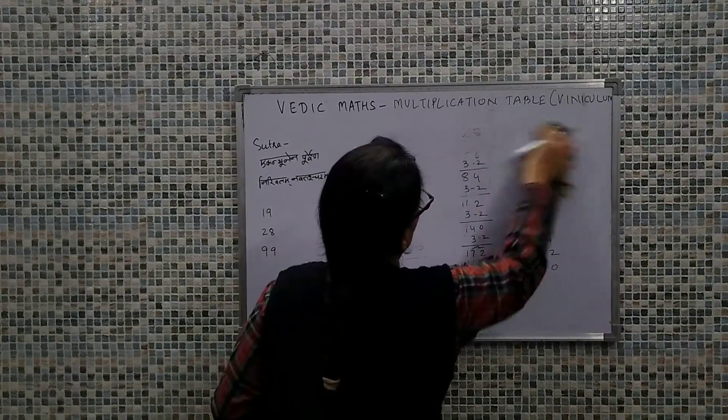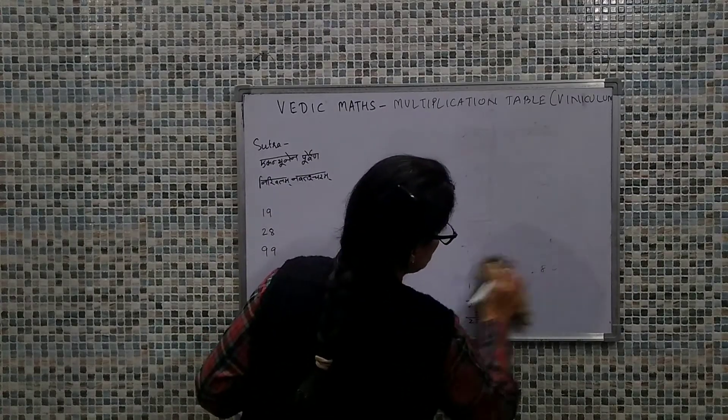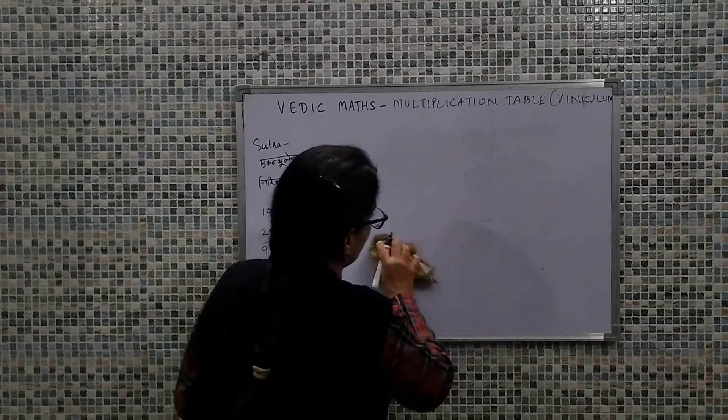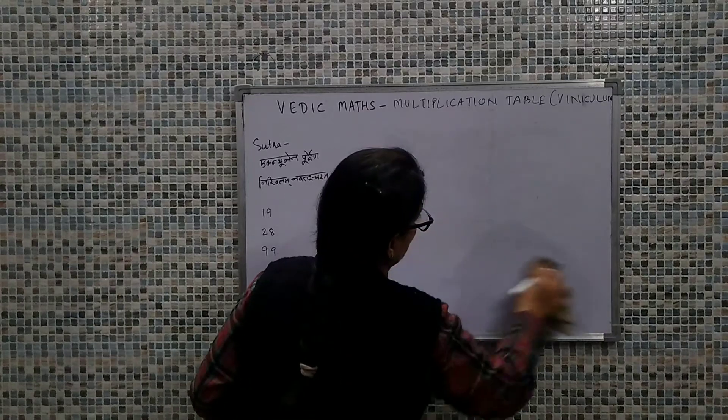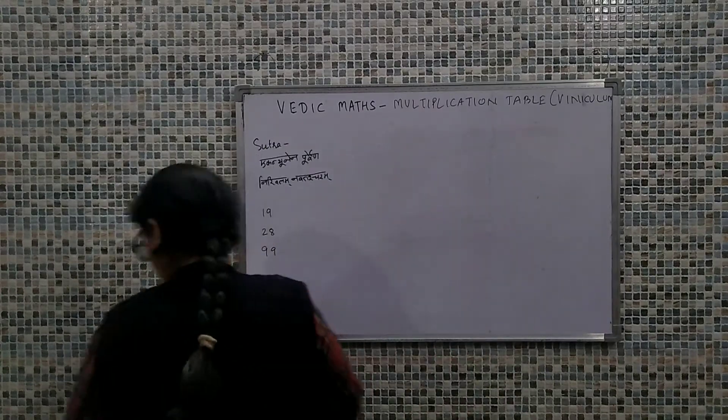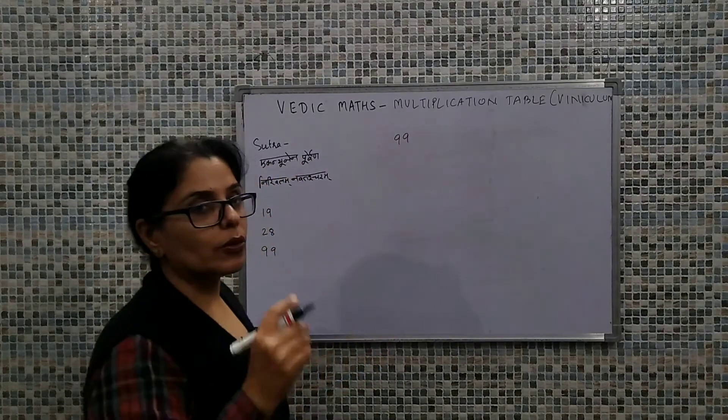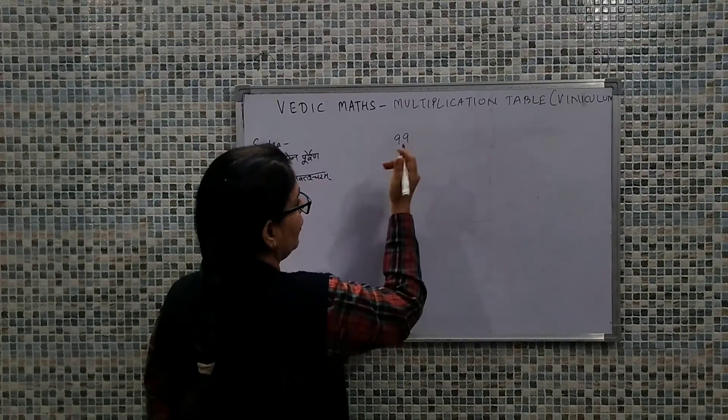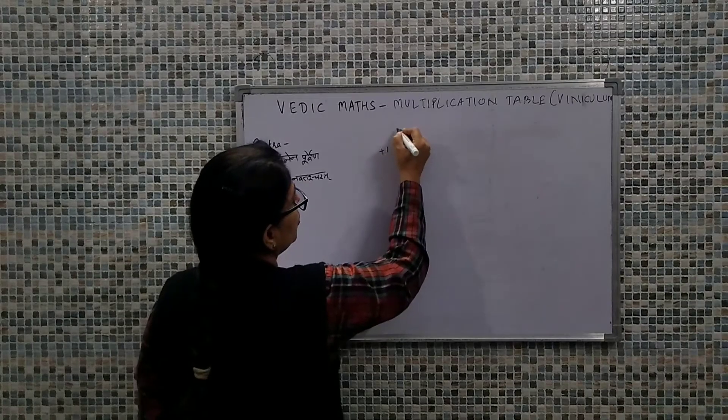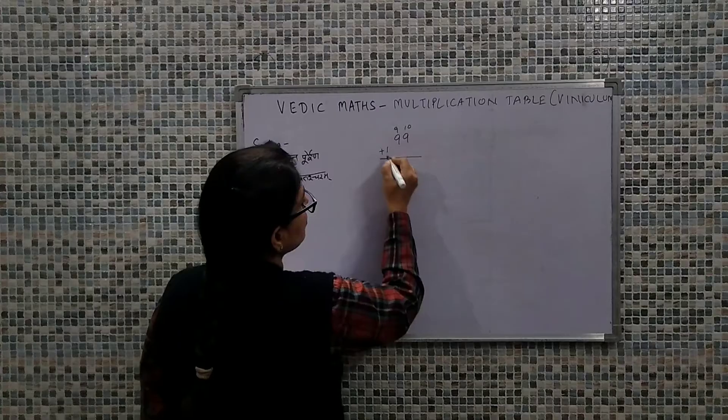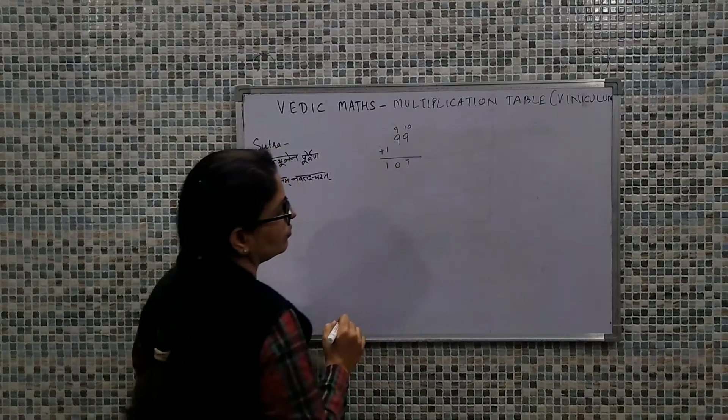Taking another example. We always need to convert the bigger numbers, the values which are greater than 5, 6, 7, 8, 9 into the viniculum numbers, and then we need to identify what is the additive and what is the subtractive values, and just with the basic arithmetic operation we proceed with the calculation. So suppose we have 99. Now if we are talking about 99, both the values are greater than 5, so what I'll do is I'll use Ekadhikena Purvena and Nikhilam.